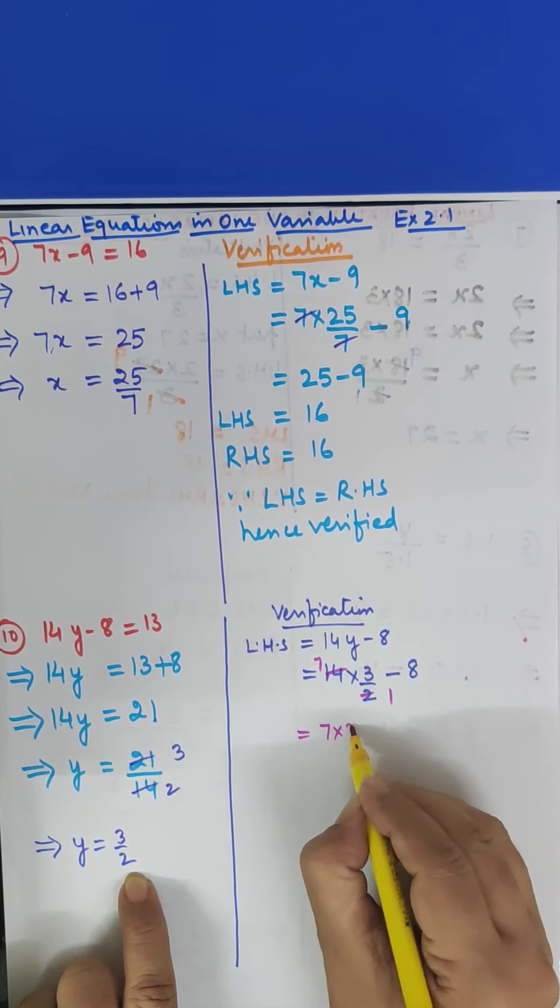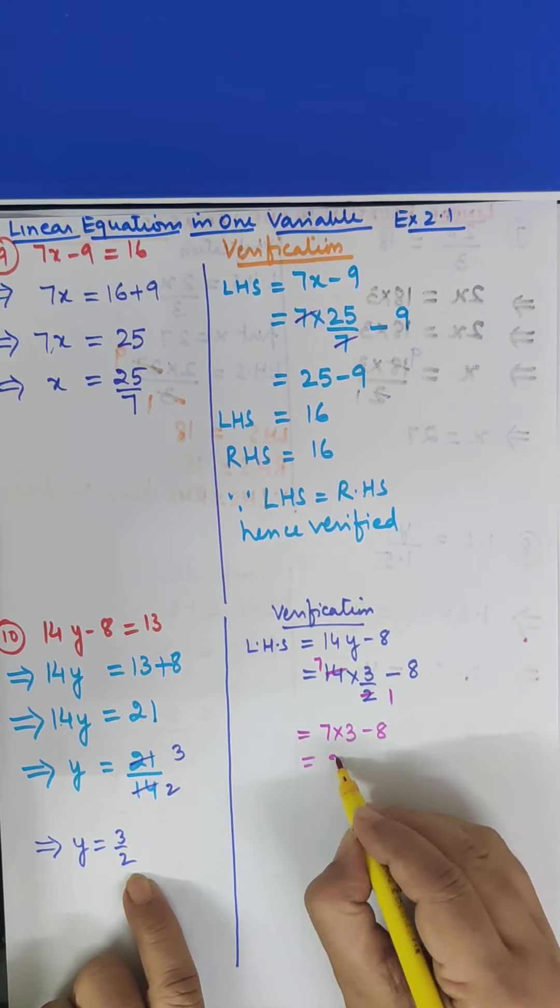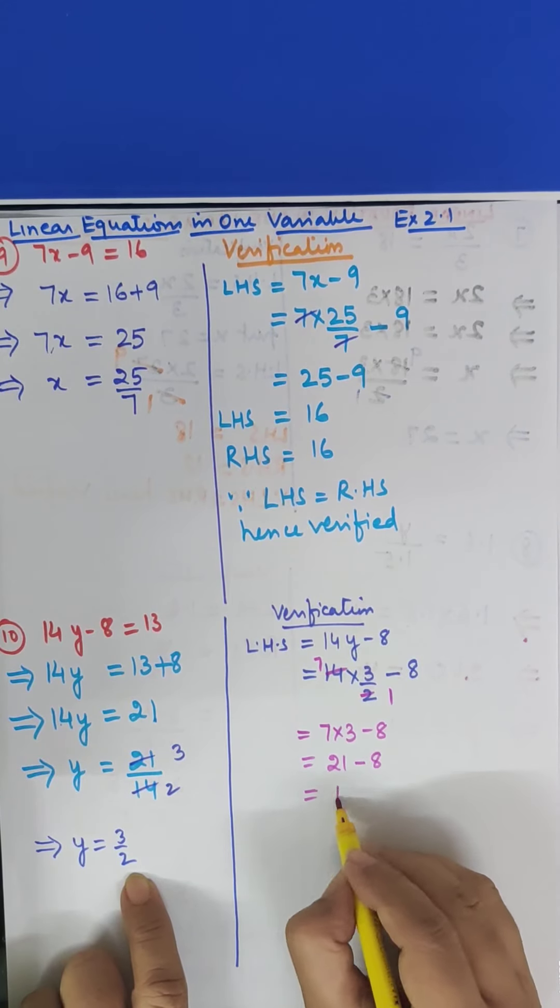7 into 3 is how much? It is 21 minus 8. 21 minus 8 is how much? 13.